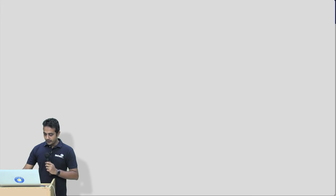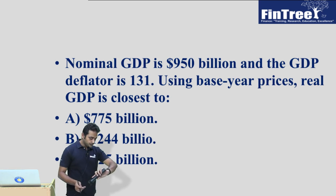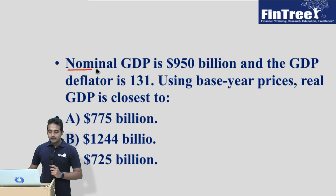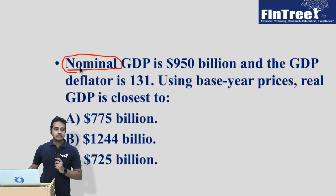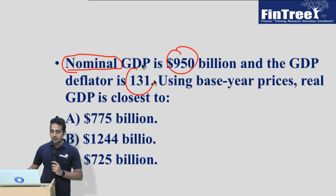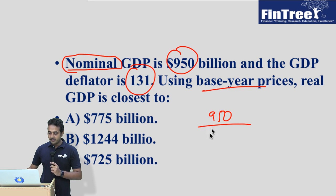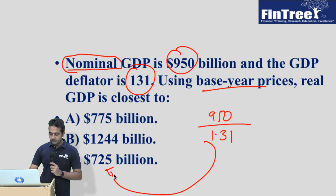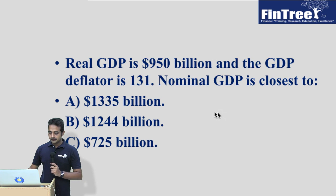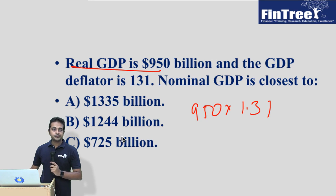So have you understood the concept? A few questions: nominal means current price — are you sure? Current price GDP is 950 and the deflator is 131. Real GDP would be 950 ÷ 1.31 = approximately 725. The other way round: 950 × 1.31 = approximately 1244.